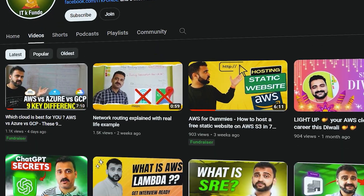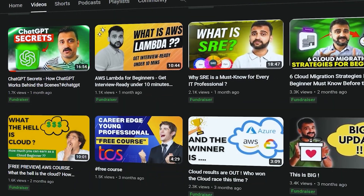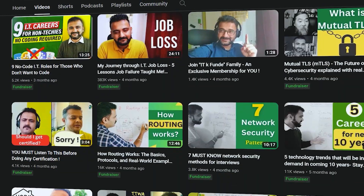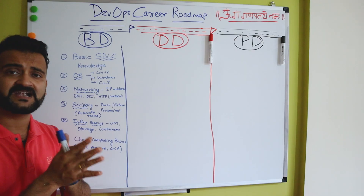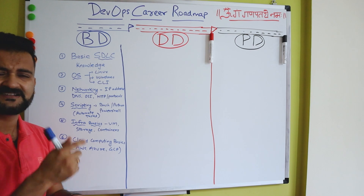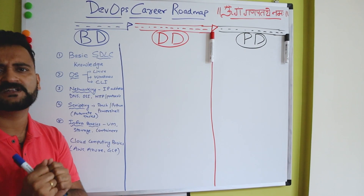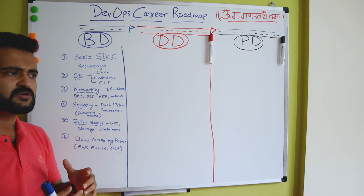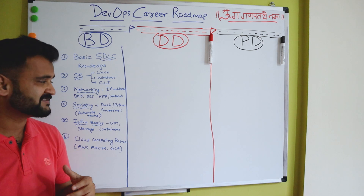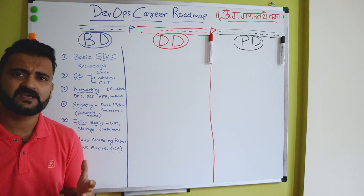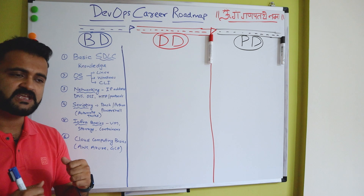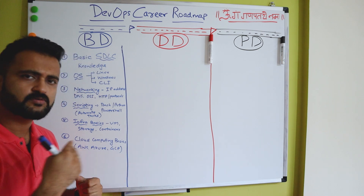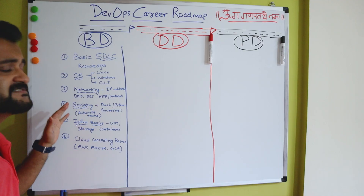Next is networking. This channel has grown based on networking videos, so if you're a complete beginner you can check out our networking and infra playlist. You need to know what an IP address is, how the OSI model works, what protocols exist, how DNS works, and all those kinds of things. But don't get stuck — even with a little knowledge, try to move ahead. You don't need to become an expert before going into DevOps; you just need the basics.